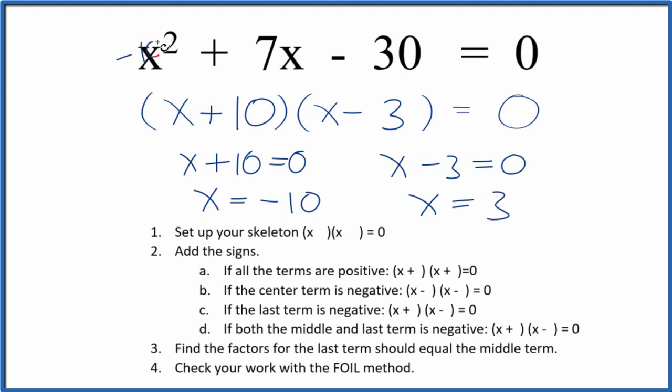If you put -10 in for x, all of this will add up to 0. If you put 3 in for x, it would also add up to 0. If you use the quadratic equation, you would end up with these same numbers. This is Dr. B factoring the equation x² + 7x - 30.